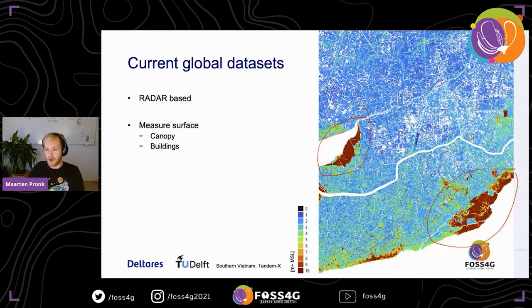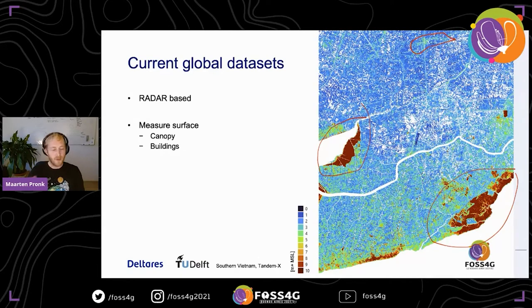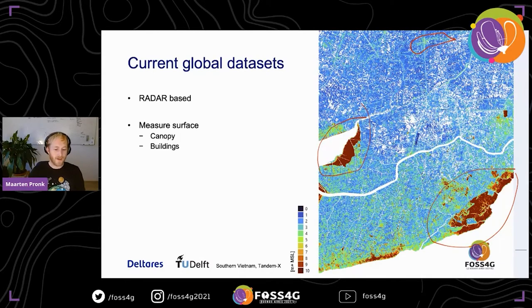You can also see patterns along canals where buildings are measured from the top. What we really want is the actual terrain to assess flood impact. Normally we use LiDAR — which uses a laser instead of radar — but airborne LiDAR surveys are very expensive and not feasible at a global scale.